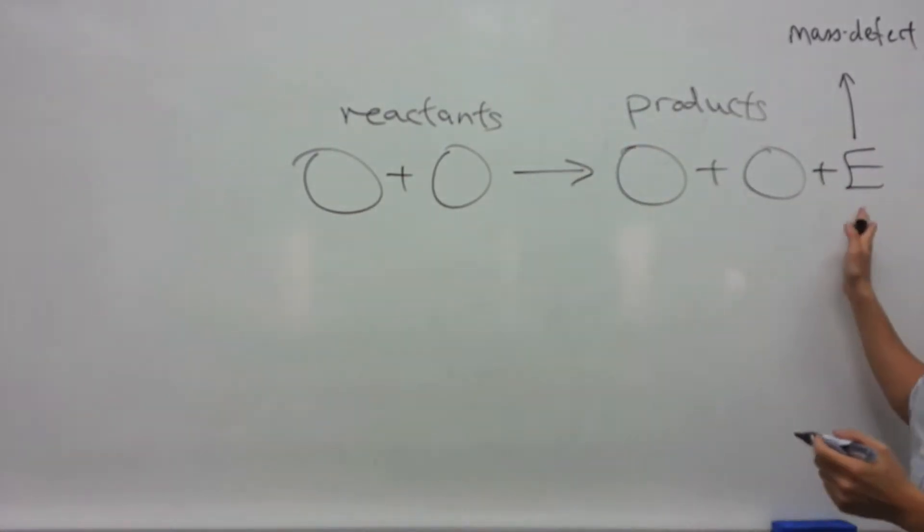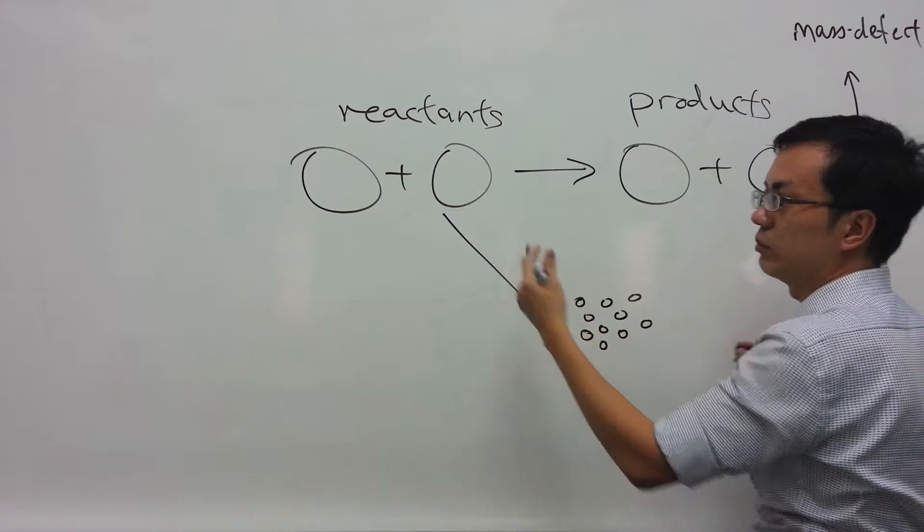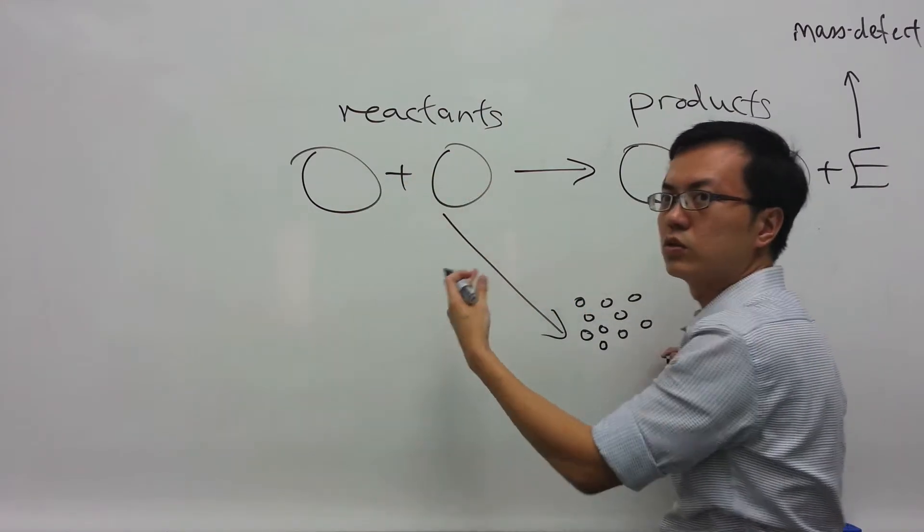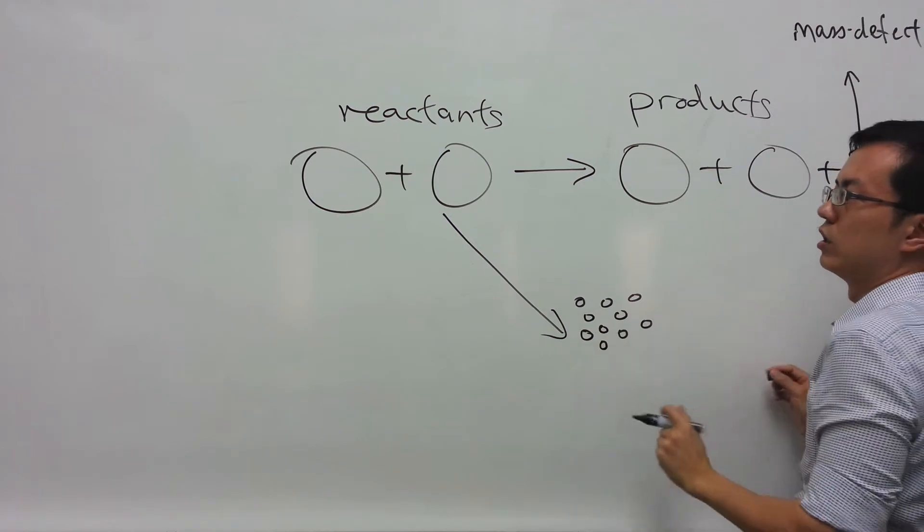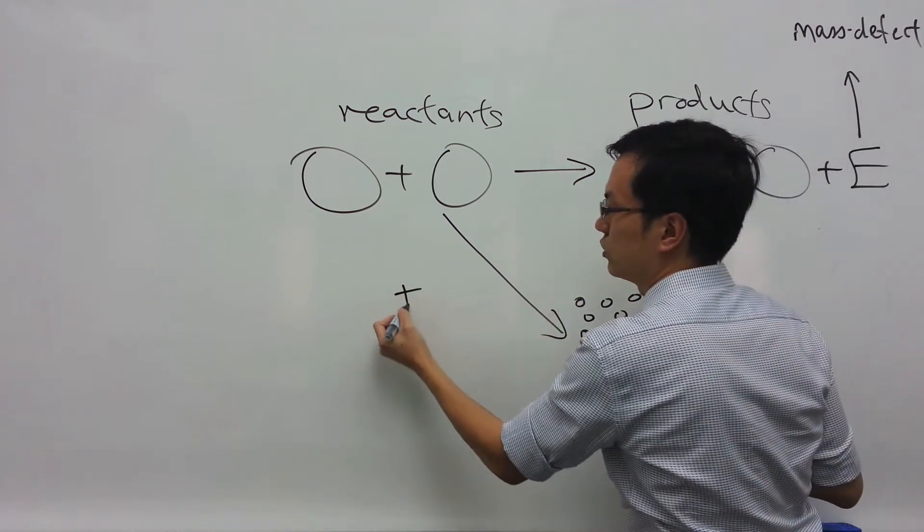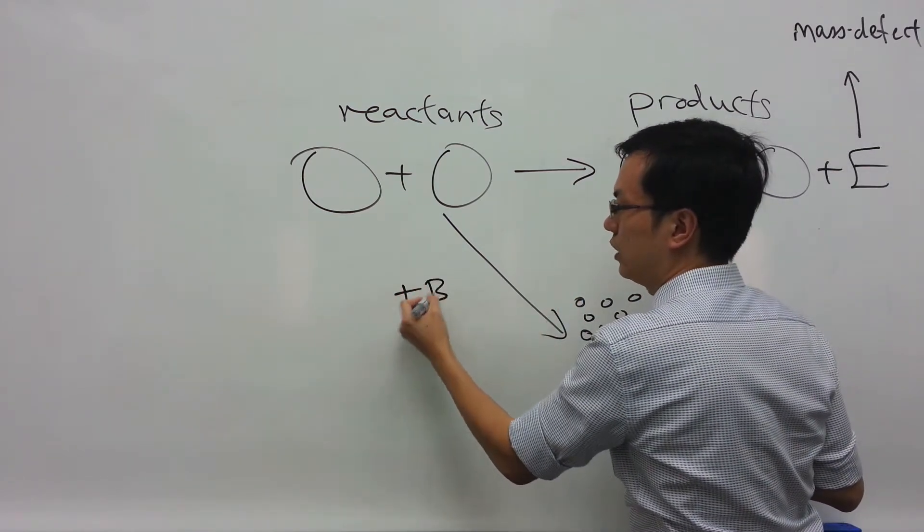How is this energy related to the binding energy? Imagine if we were to break up these reactants into their constituent nucleons. This would require a certain amount of energy. Let's call it BE1.